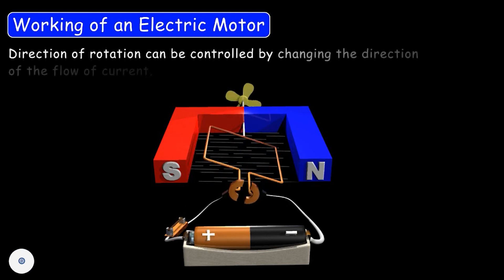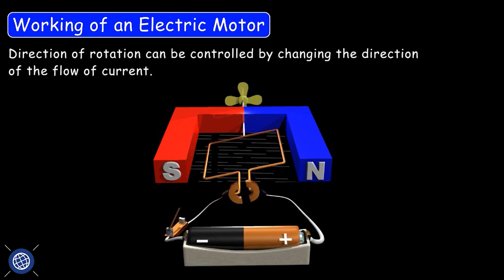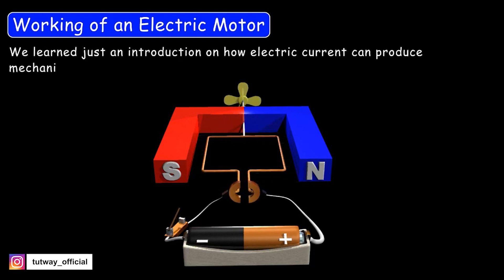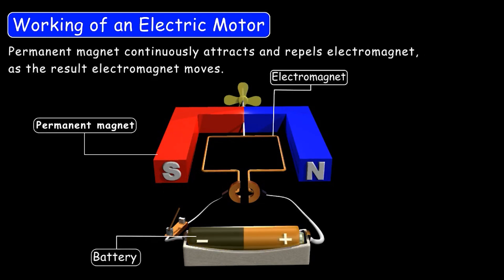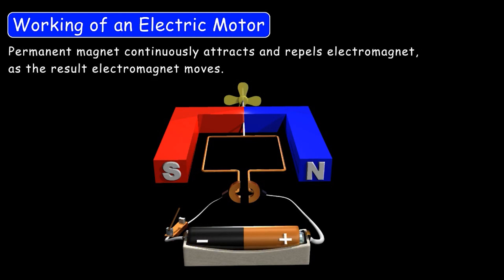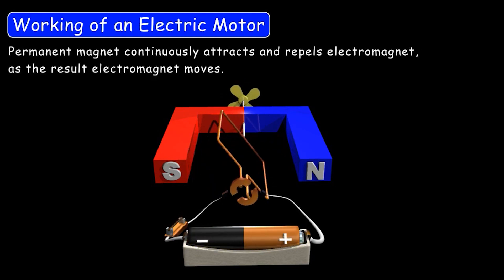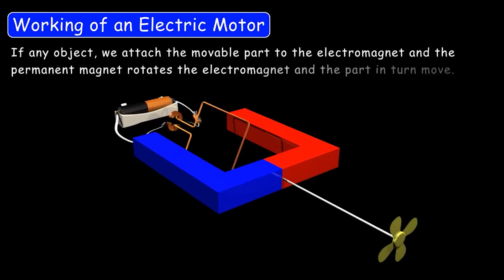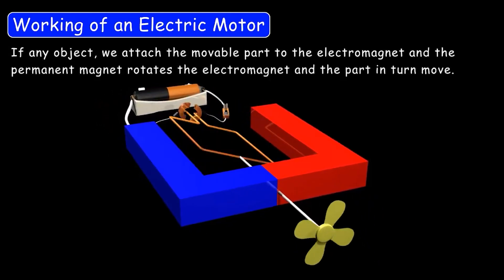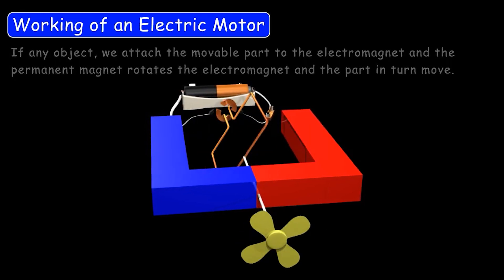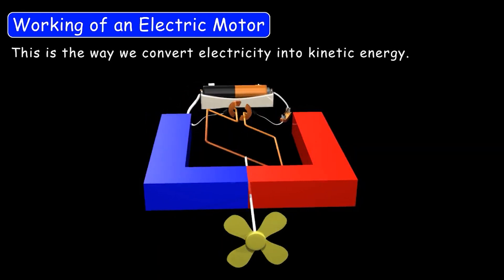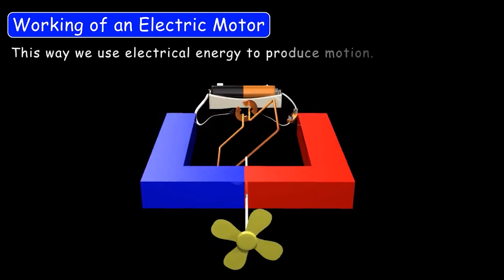The direction of rotation can be controlled by changing the direction of the flow of current. We will learn about the DC motor in more detail in higher sections — this is just an introduction. In short, a motor has a permanent magnet, an electromagnet, and a battery. The permanent magnet continuously attracts and repels the electromagnet, causing it to move, and whatever is attached to the electromagnet rotates. This is how we convert electricity into kinetic energy.